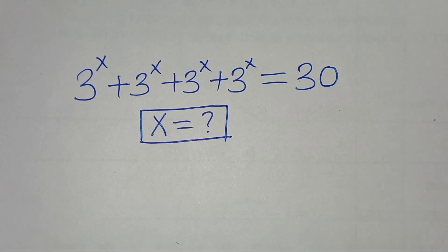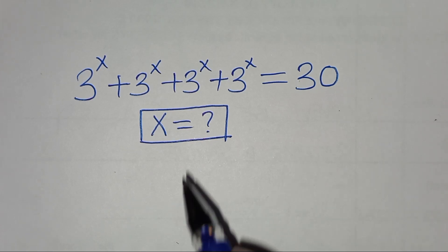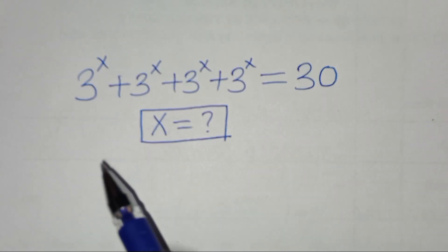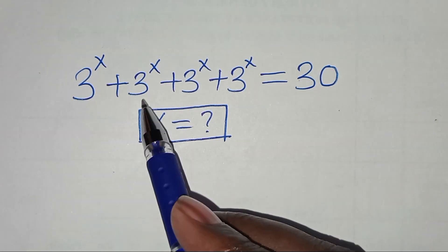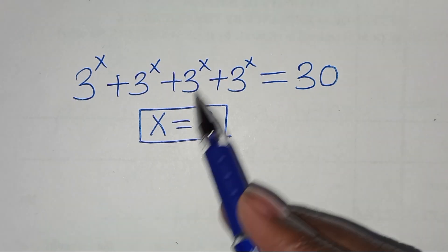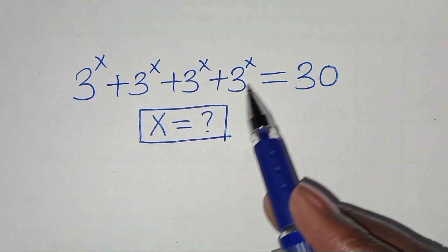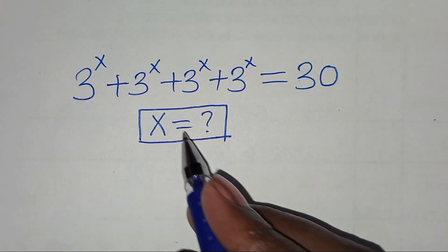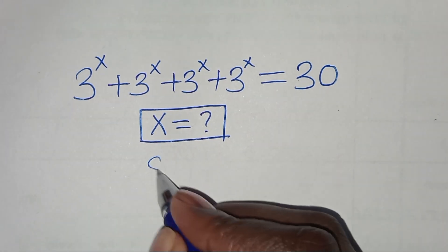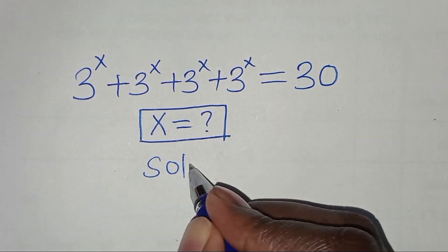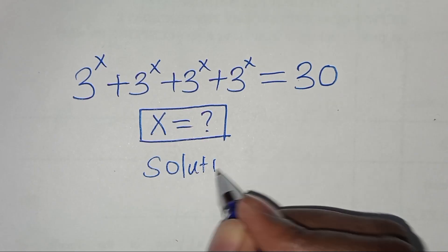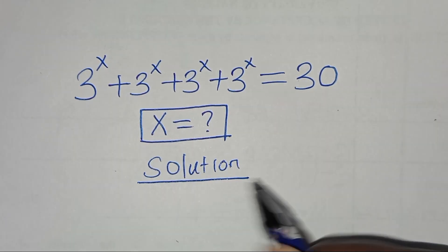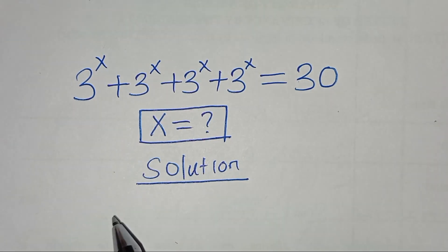Hello everyone, you are welcome to solve this nice exponential equation, which is 3 to the power x plus 3 to the power x plus 3 to the power x plus 3 to the power x is equal to 30. So what is the value of x?